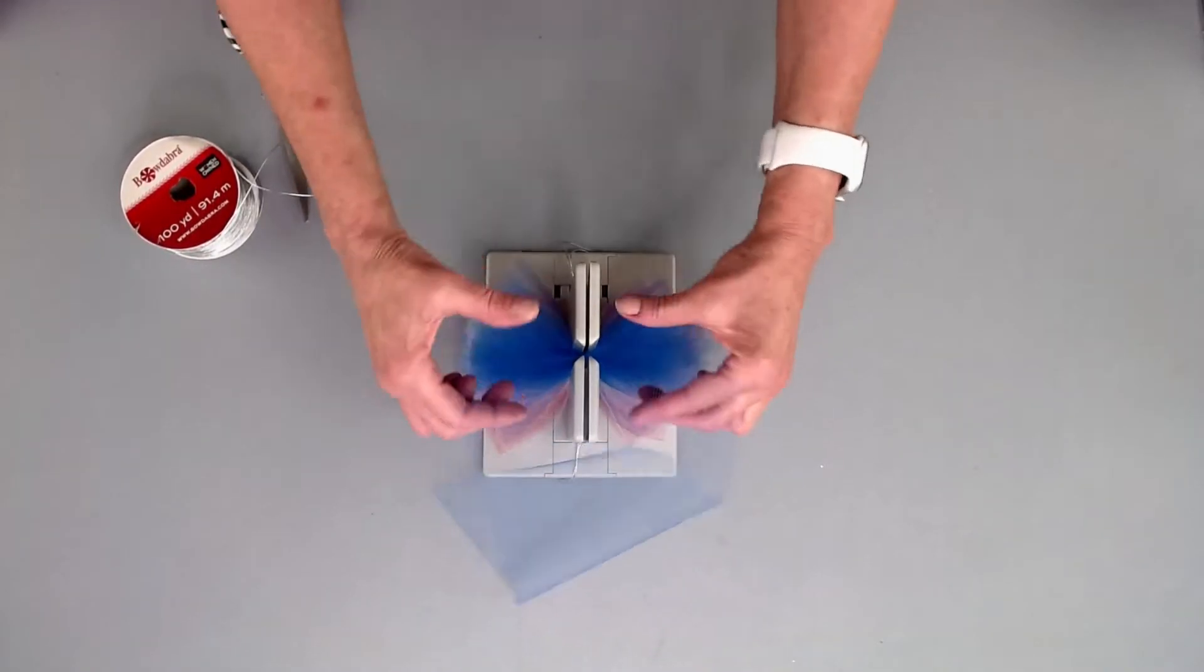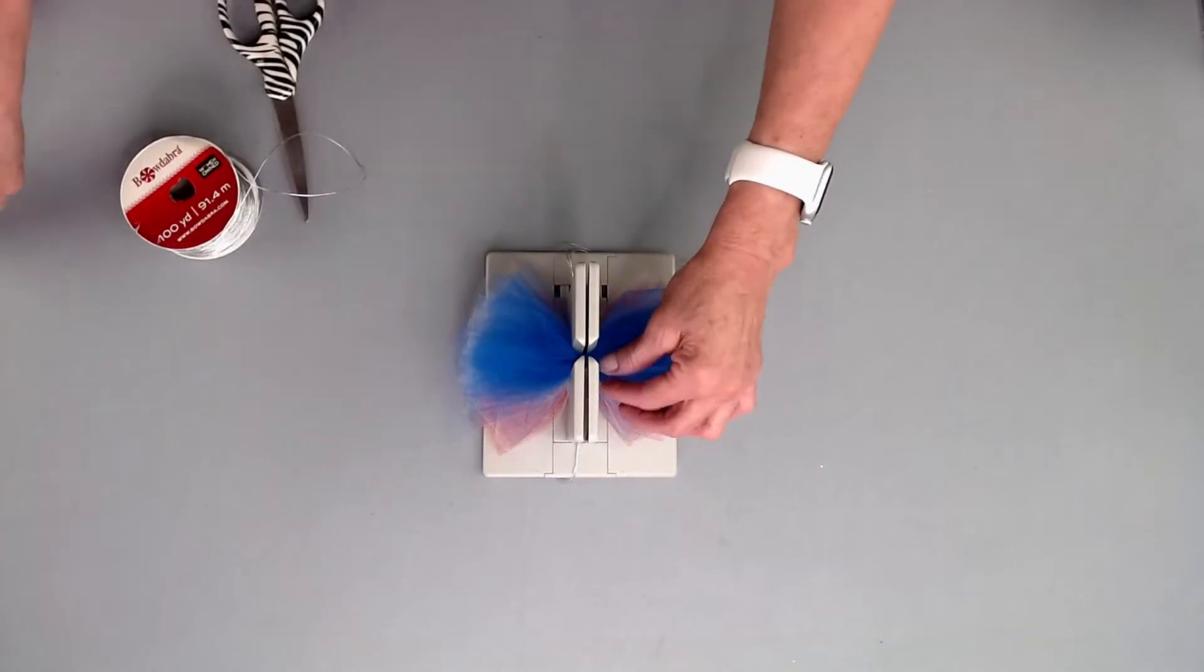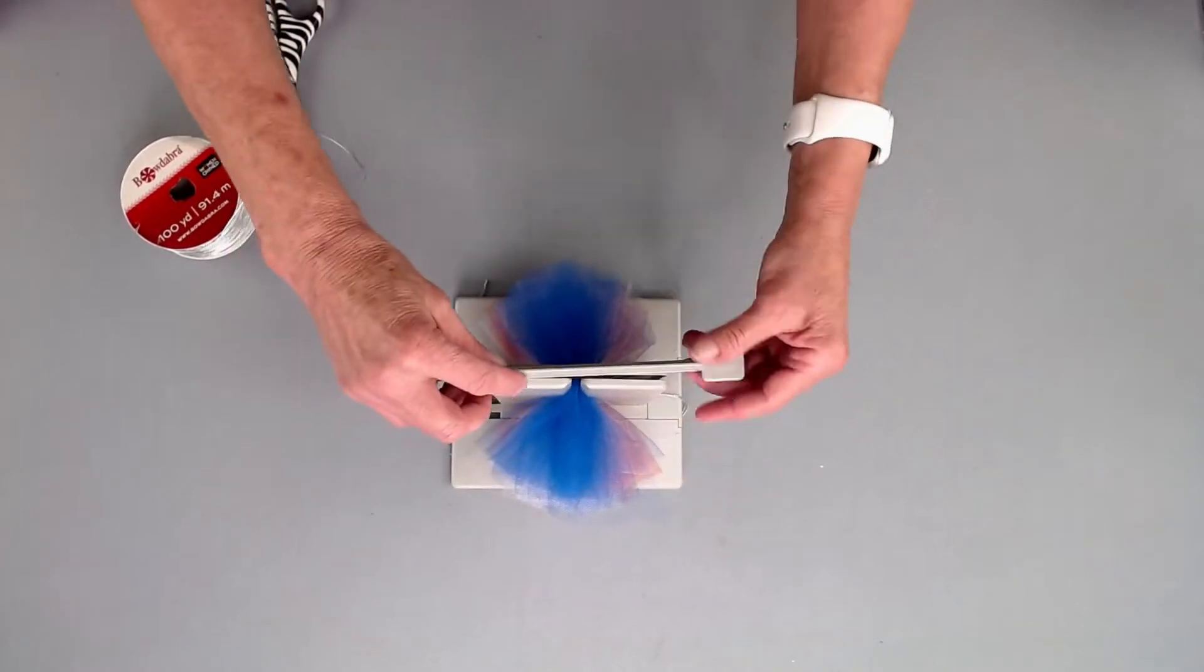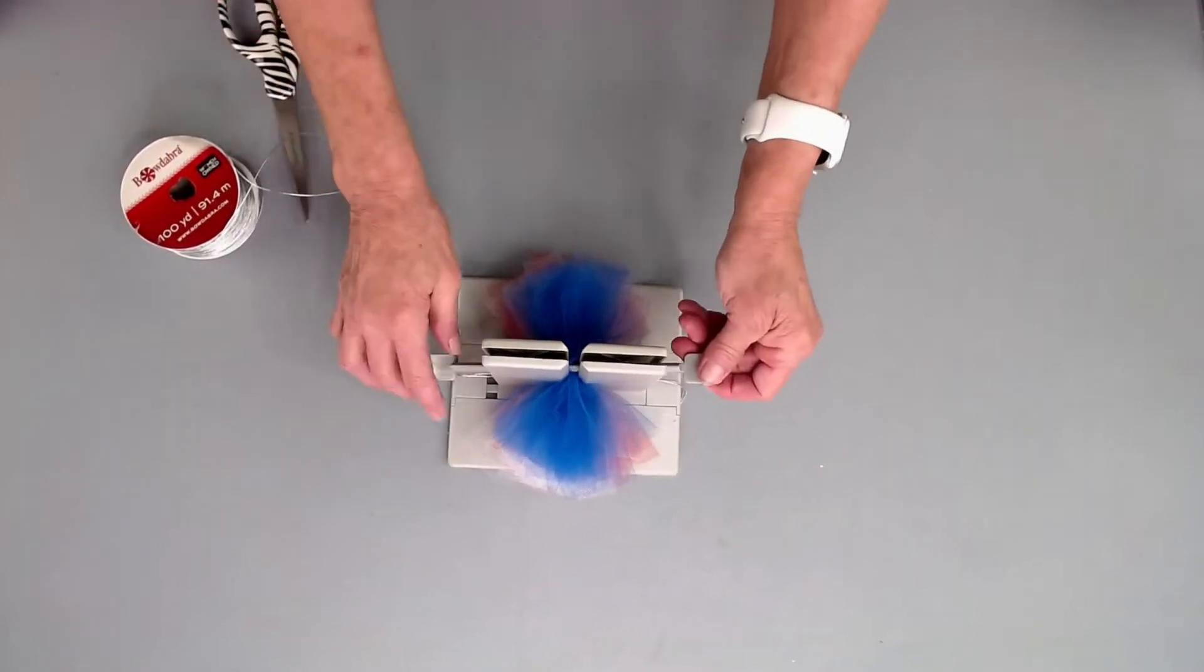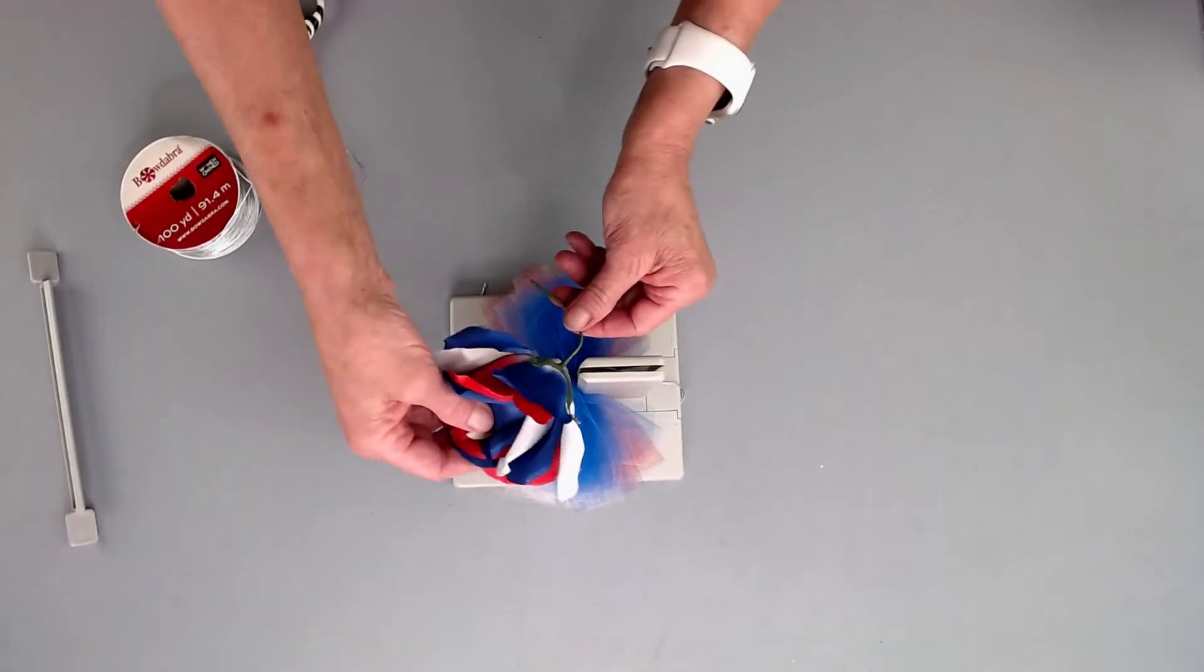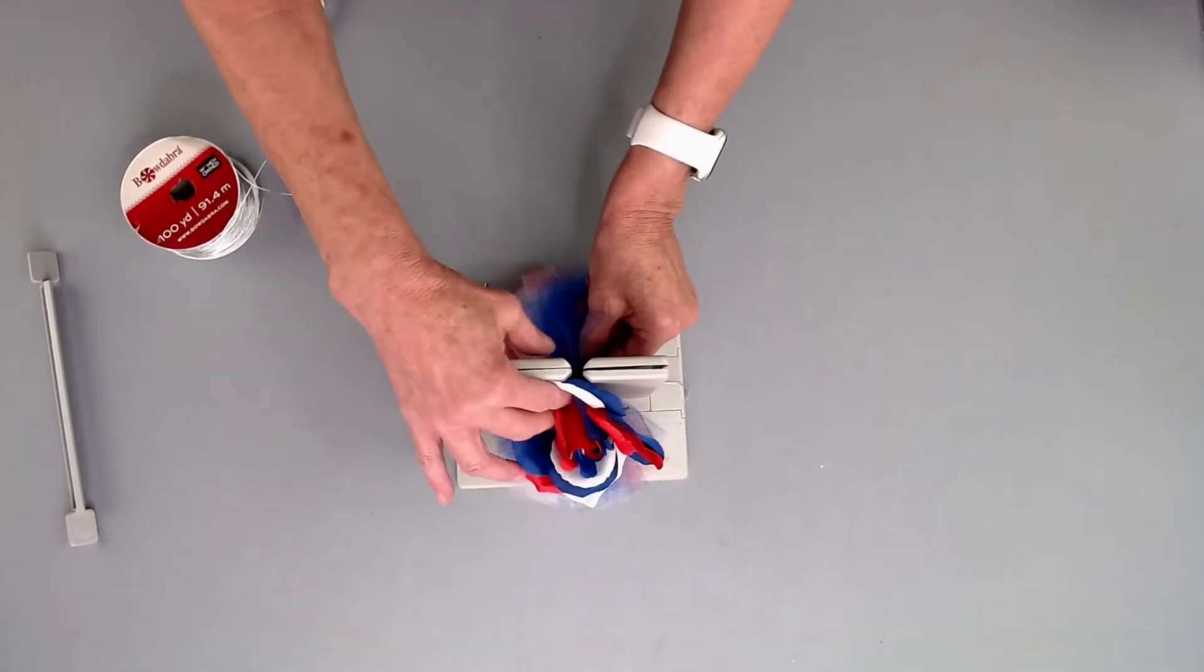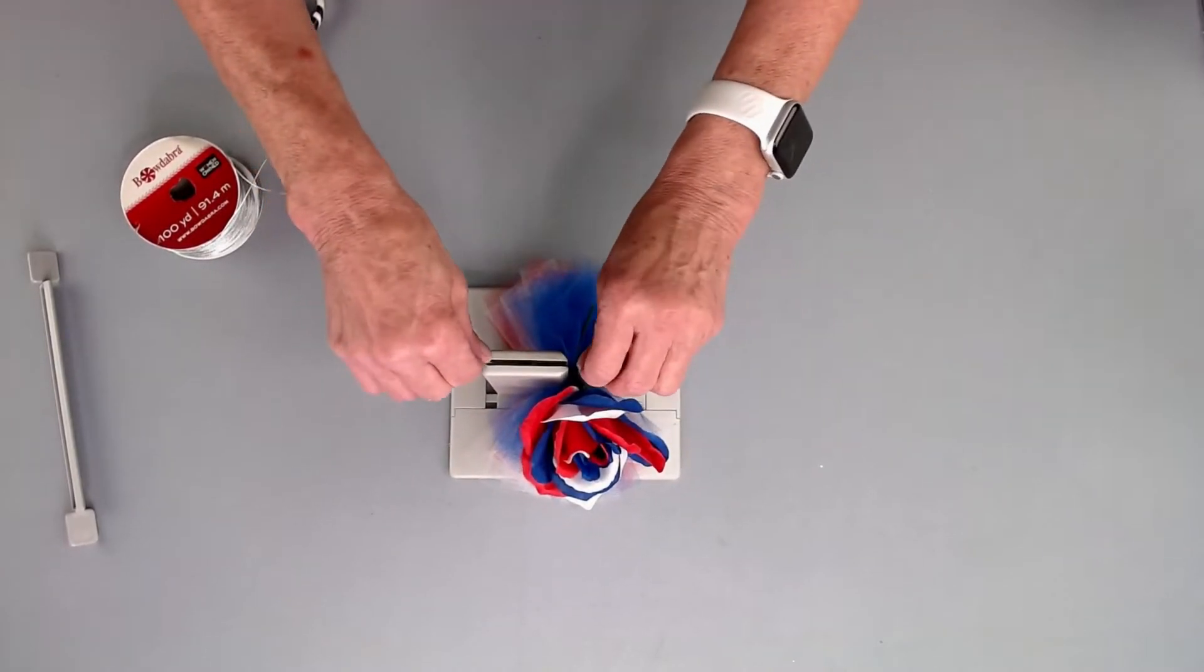We're just going to scrunch this in here and keep scrunching. I'm going to take my Bowdabra wand and push everything down into the Bowdabra. Then I'm going to take my cute little patriotic bow rose.